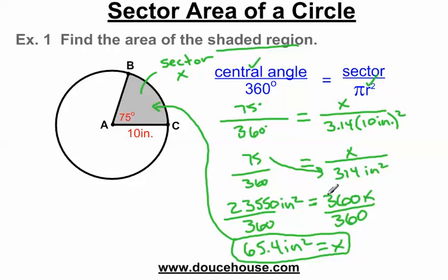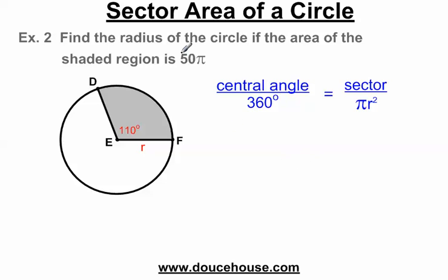I'm going to do one more problem and then call it quits. Find the radius of the circle if the area of the shaded region is 50 pi. This is the sector, the area of the sector here. So we know the sector, we know the central angle is 110, and we're trying to find the radius. How do we do this?